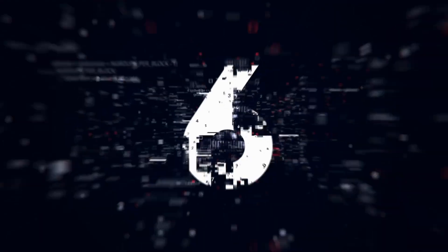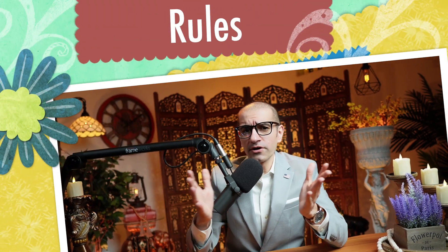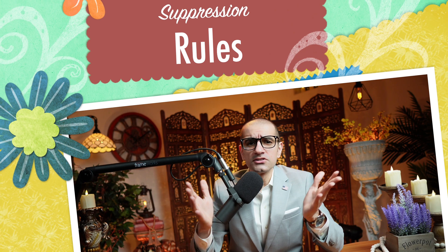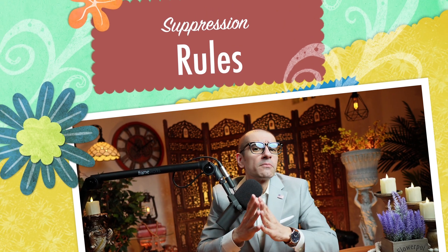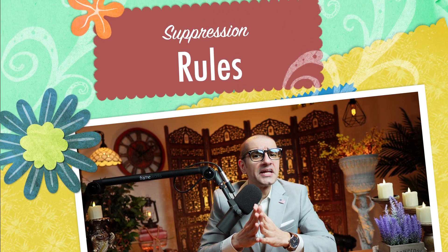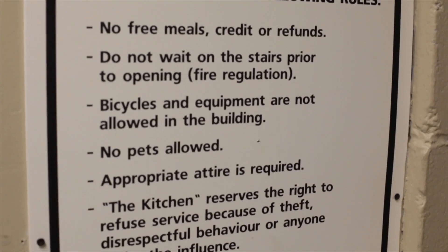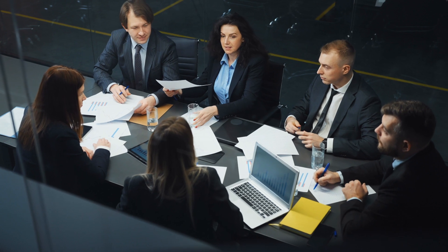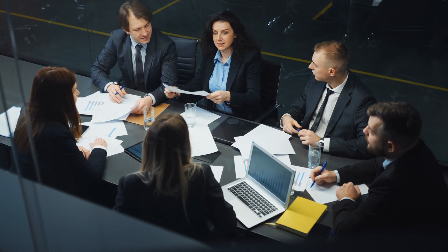Number six: Amazon Inspector supports the suppression of findings based on criteria you define. You can create suppression rules to suppress findings that your organization deems as an acceptable risk.